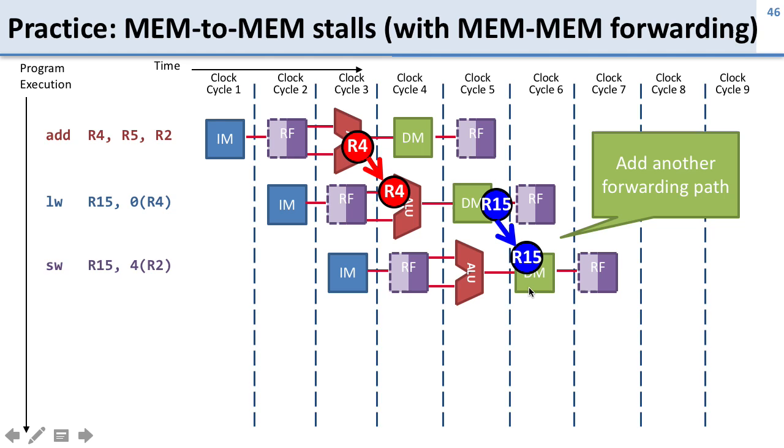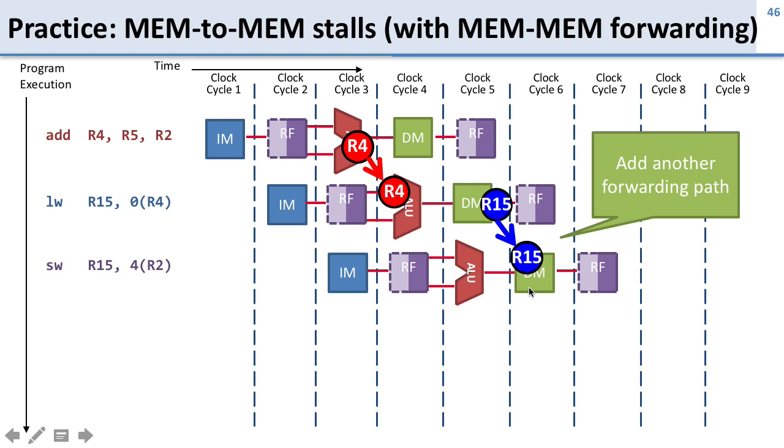Then we wouldn't have to put in a delay there. And so what does that look like? Well, here's our pipeline, and what we've done is we've had a forwarding that comes from right back here, from after this stage. We're going to forward it back to the memory stage. So this says we can take the results from a previous memory operation and send them right into the data of the next memory operation.